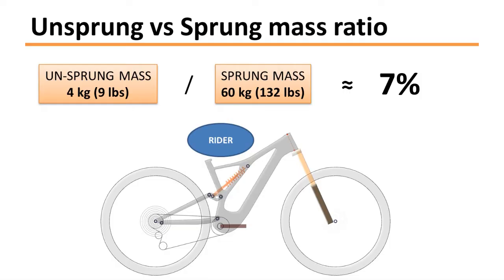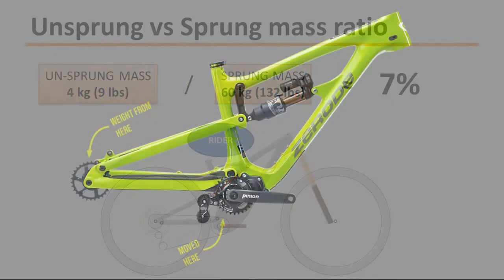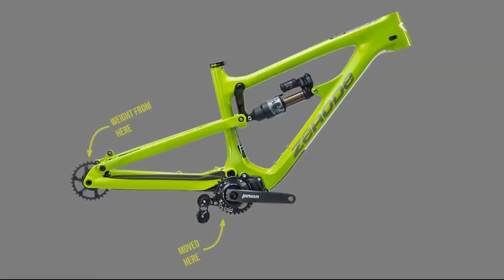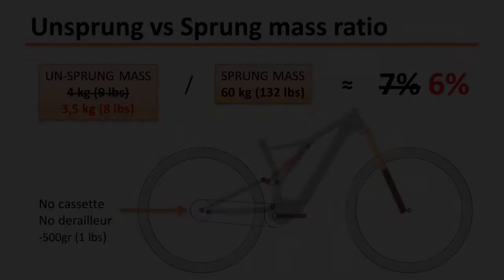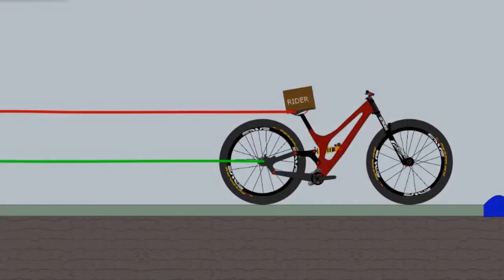So in this case you get a ratio of seven percent. Using the same example but removing the rear cassette, okay, using a gearbox for instance, you can save 500 grams on the unsprung mass. This is one pound and you basically decrease the ratio from seven to six percent, so it's a difference of only one percent.